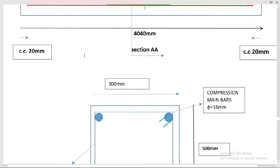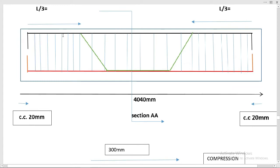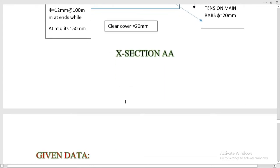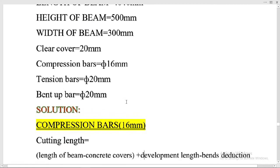I want to show you the bent-up bar in elevation view. It goes from here, bending up here and then back down. It is not clearly visible because it is in the mid of the beam in elevation view — it is just behind the compression bar in the middle. Similarly, you cannot see it in the section view. This is our question today.